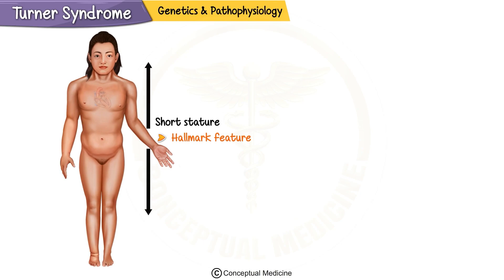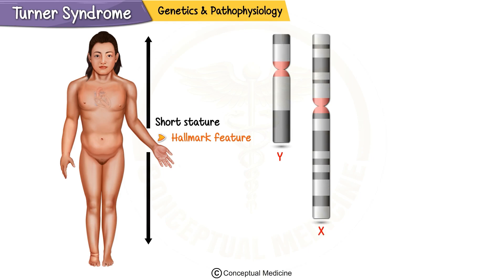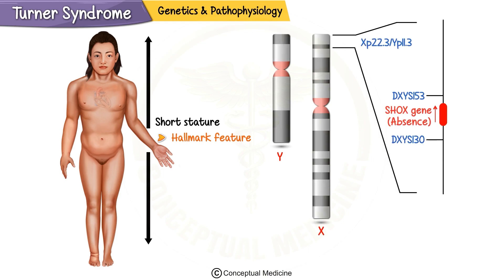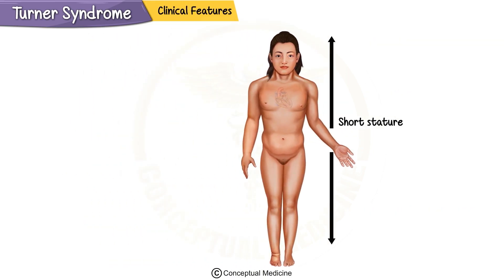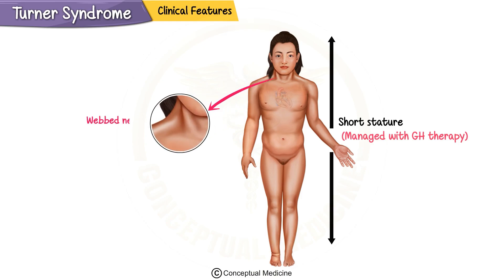One of the hallmark features of Turner syndrome is short stature, present in nearly all patients. This occurs due to the absence of the SHOX gene, located on the X chromosome, which is critical for normal bone growth. Short stature can be managed effectively with growth hormone therapy, especially if started in early childhood.